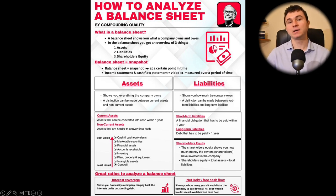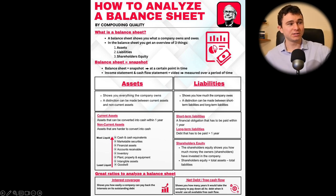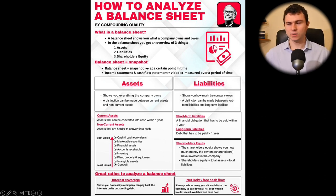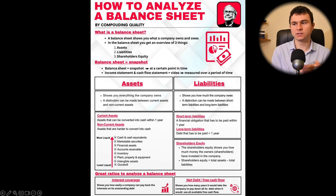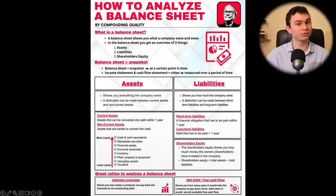For example, if a company acquires another for $1 billion but the target's balance sheet shows $500 million in assets, the $500 million gap goes into the goodwill category — you can't sell it quickly to get cash. On the liabilities side, you have short-term liabilities (current liabilities — financial obligations due within one year, like short-term debt) and long-term liabilities (non-current liabilities — debt due in five or ten years). The most important element in liabilities is debt.